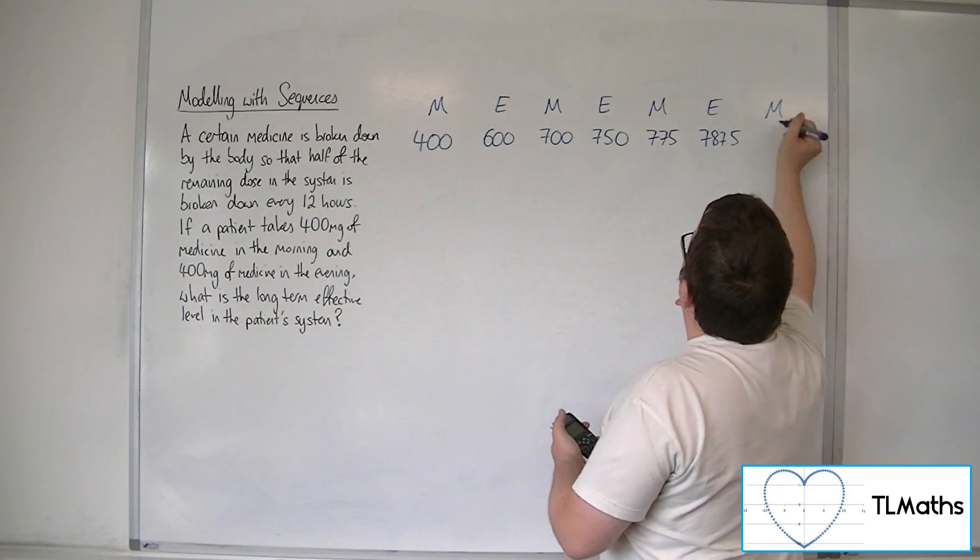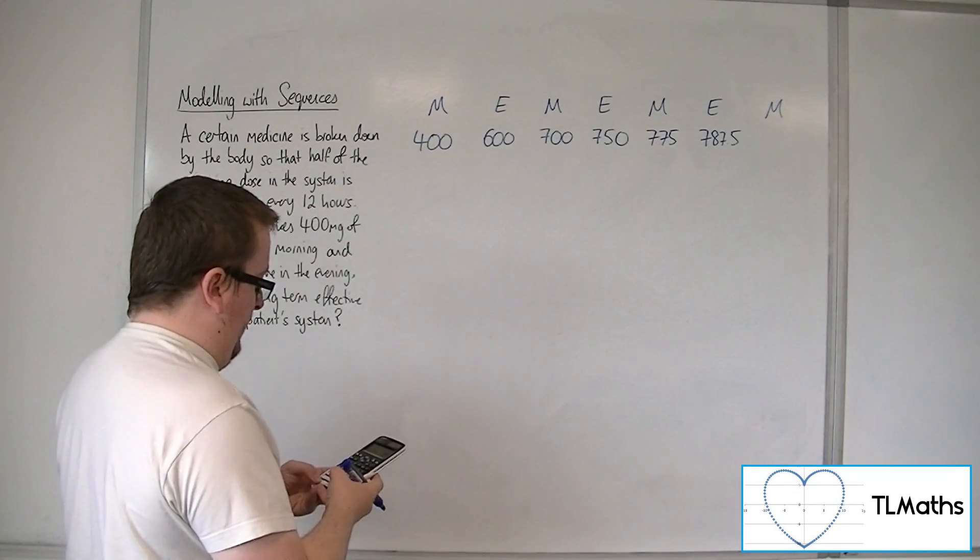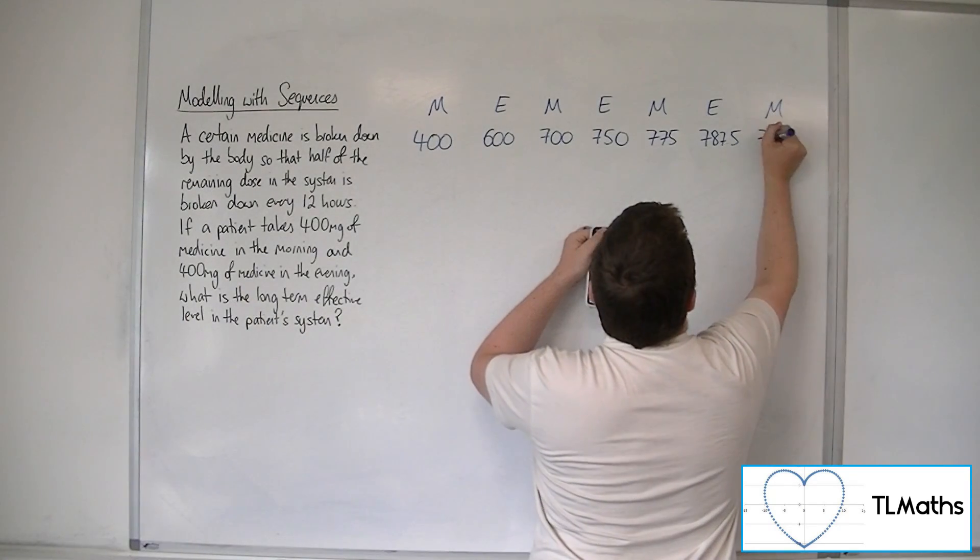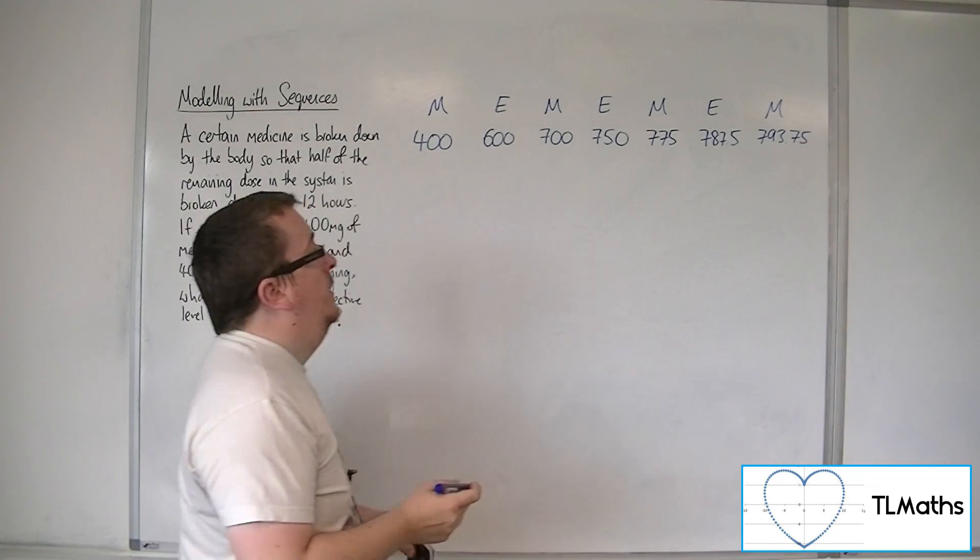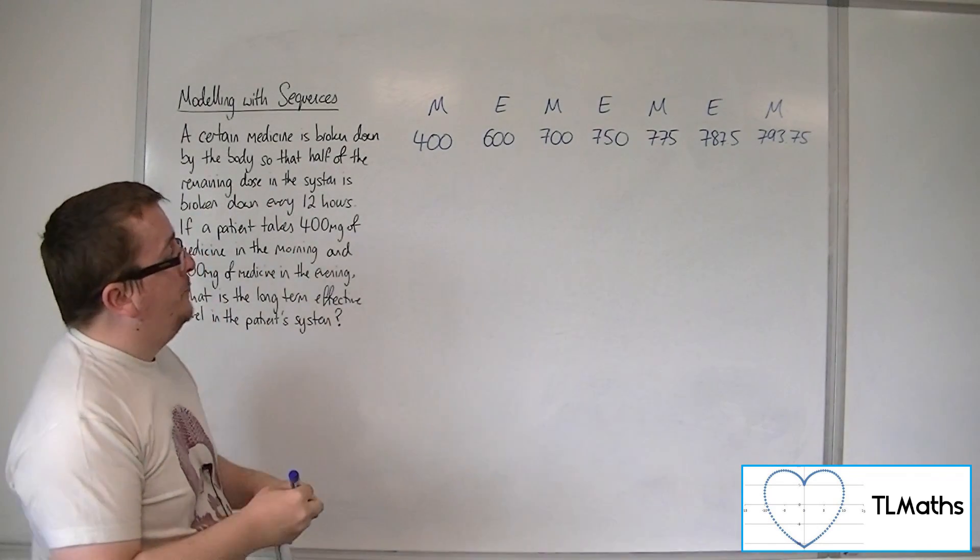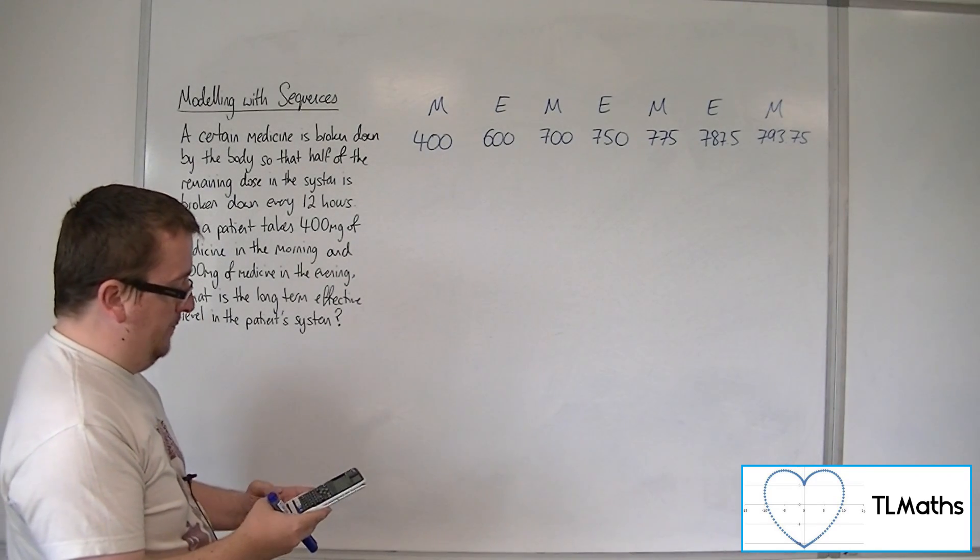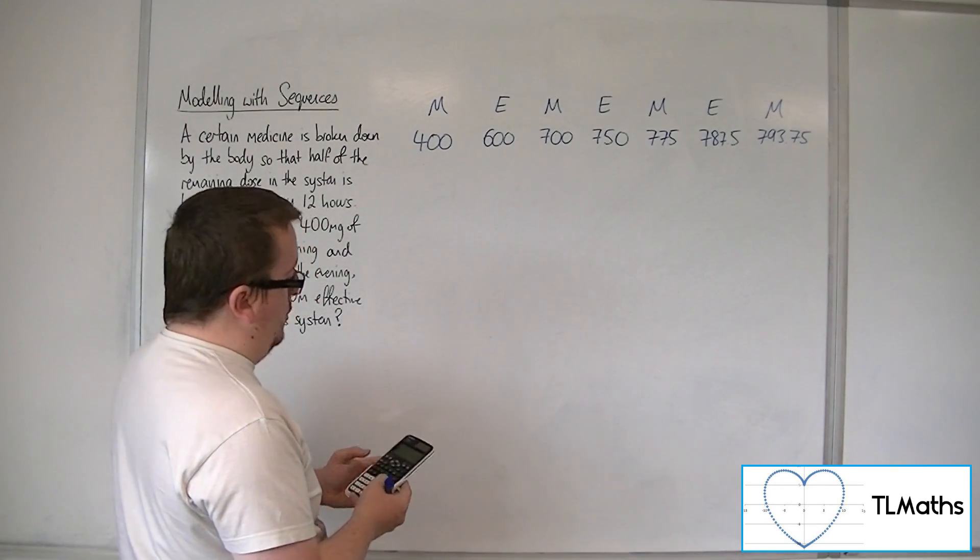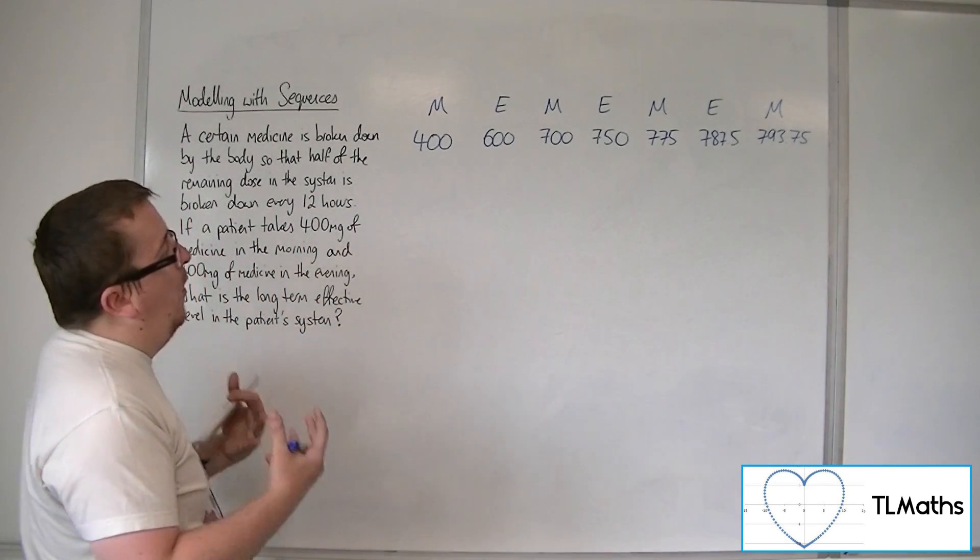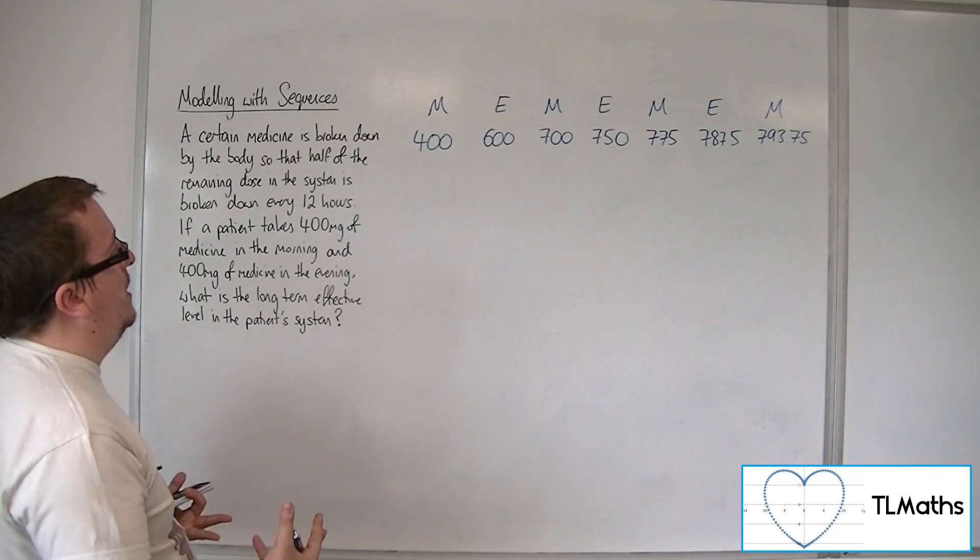So, I'll do one more by the morning, halved that, add on another dose. We're up to 793.75mg. So, the gaps between these amounts are certainly decreasing, okay? So, what will be the overall effective level, okay?